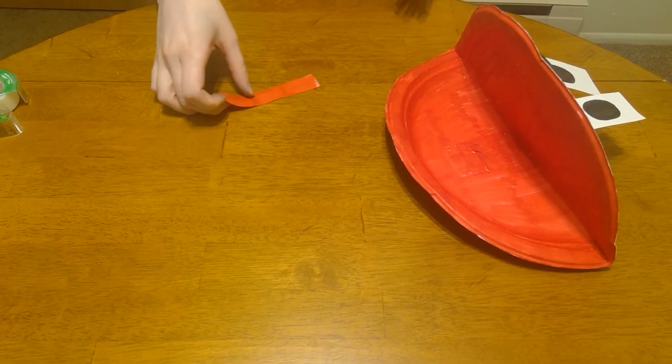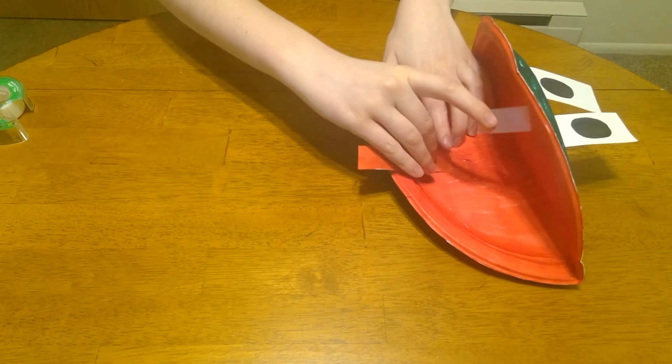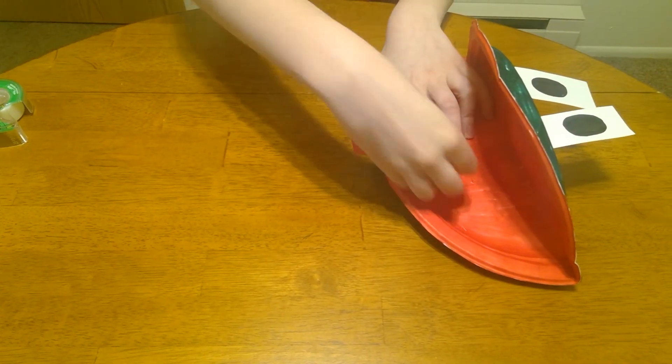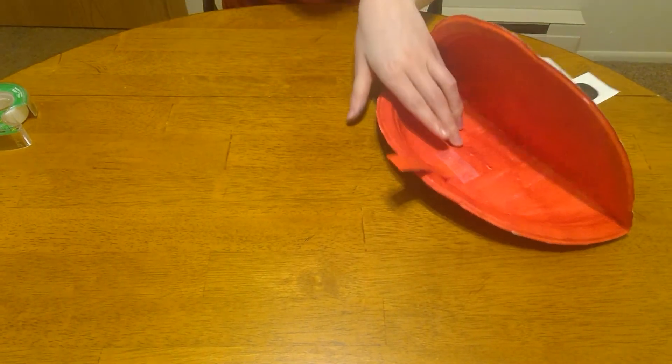Now for the last step, we're going to put the tongue in the mouth. So you can either glue or tape it in the mouth and leave a little at the end so that he can catch some flies. Now you've got yourself a frog puppet.